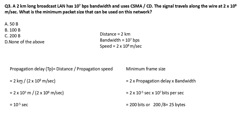Using the same formula, first find propagation delay: distance / speed = 2 km / (2 × 10^8 m/s). Convert 2 km to meters: 2 × 10^3 m. Divide: (2 × 10^3) / (2 × 10^8) — the 2s cancel, leaving 10^3 / 10^8 = 10^(3-8) = 10^(-5) seconds.